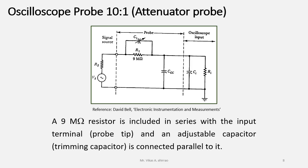A 9 megaohm resistor is included in series with the input terminal, i.e., at the probe tip, and an adjustable capacitor, i.e., C1, which is also called as a trimming capacitor connected in parallel.